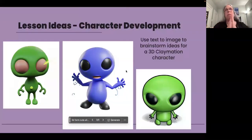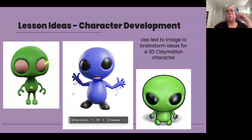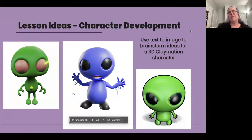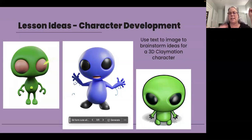I want to talk about a couple of lesson ideas I've actually done — two so far this year, and it's my first year just dipping my toes in. I have a film and animation class where they do claymation. We actually did this one first in Firefly, then I made three examples in Photoshop. I did '3D form, cute alien' and had them use this to brainstorm — if you want to do a cute puppy, what kind of character are you going to make? Type it in, hit generate, and see all the different things that come up to help generate ideas.